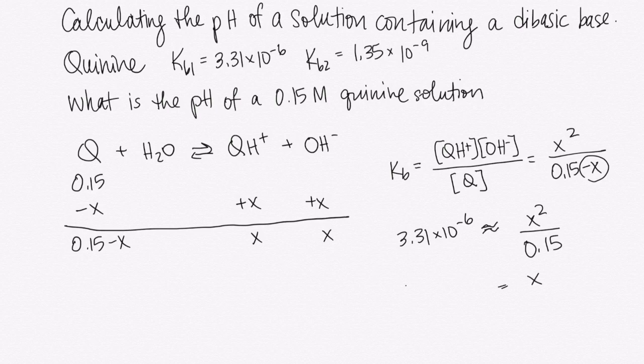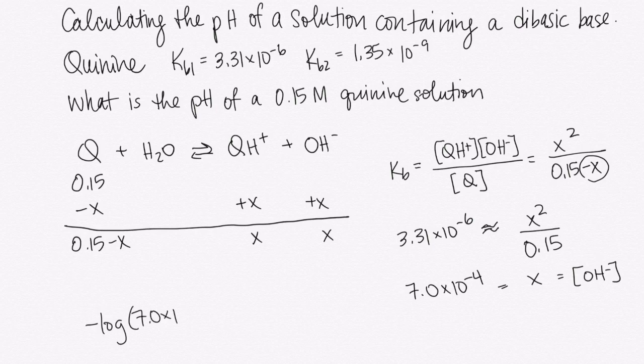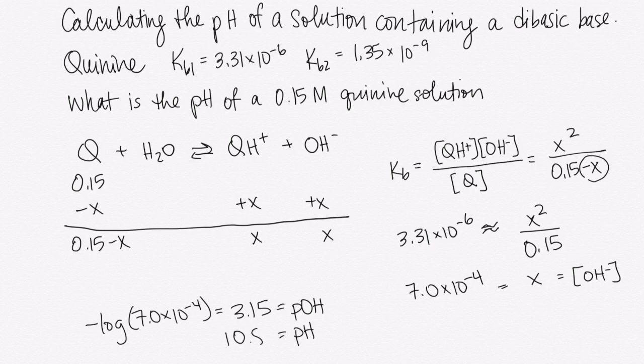When I solve for x, I get 7 times 10 to the minus 4, and that equals my concentration of OH-. So I can take the negative log, and that gives me 3.15, and that's my pOH. And my pH will just be 14 minus that, which is 10.85.